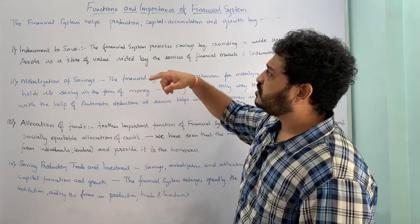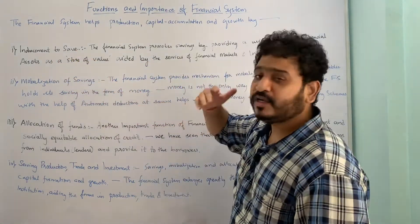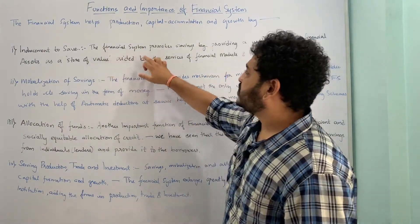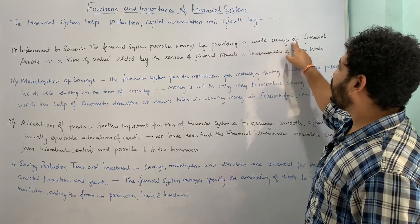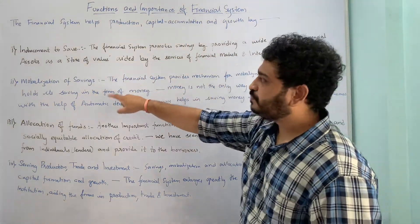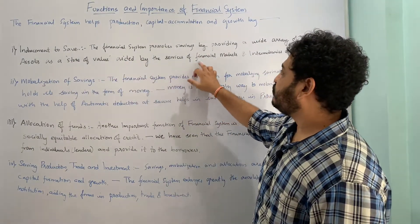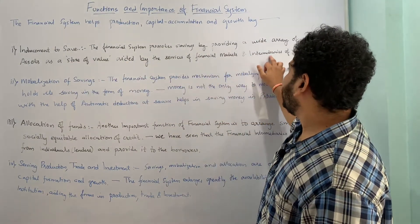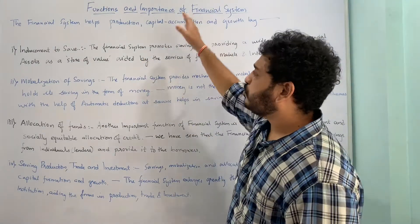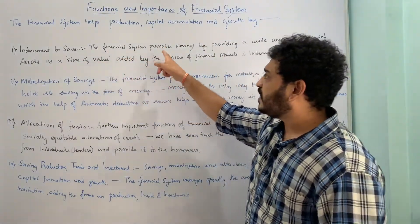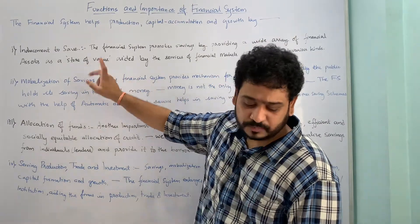The first function or point of importance is inducement to save. The financial system promotes savings by providing a wide array of financial assets as a store of value, aided by services of financial markets and intermediaries of various kinds. What is effectively happening is that the financial system promotes savings by providing us with various financial assets which can be used as a store of value.